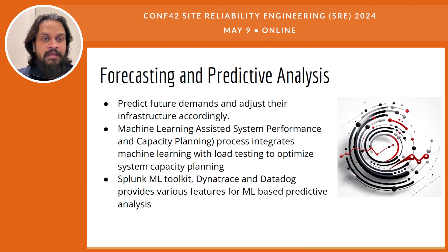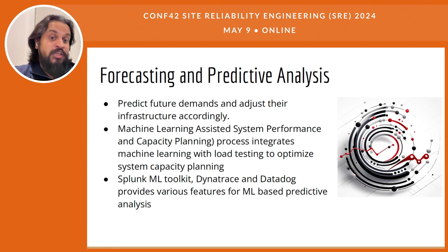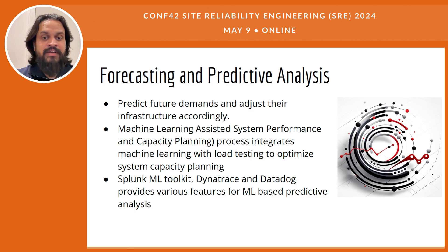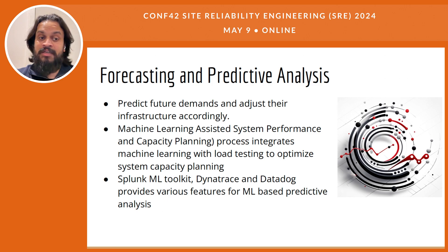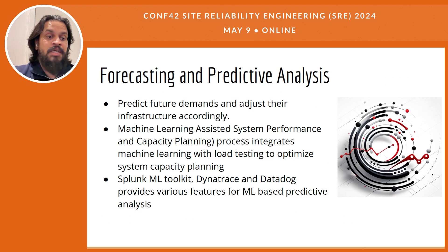The integration of ML with traditional load testing methods forms the backbone of what is called machine learning-assisted system performance and capacity planning. This innovative approach allows for more accurate and dynamic capacity planning by predicting how new software changes or user growth will affect the system. Machine learning algorithms analyze past performance data and simulate various load scenarios to identify potential capacity issues before they occur in a real environment. This proactive approach helps in optimizing resource allocation to reduce cost and enhancing overall system efficiency by ensuring that the infrastructure is neither underutilized nor over-provisioned.